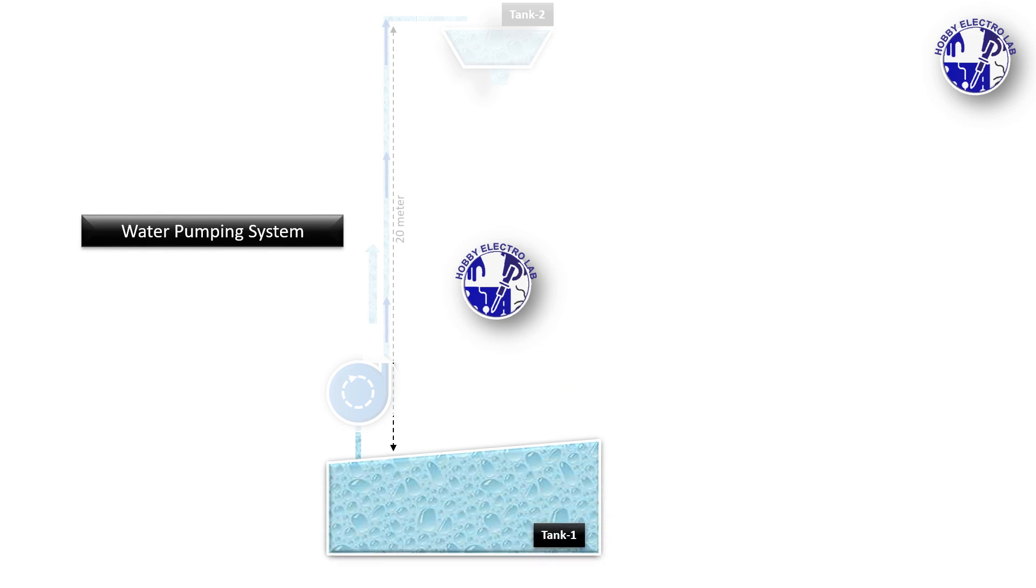Tank 1 is the lower reservoir where water is collected. A water pump takes water from Tank 1 and pumps it upwards at a flow rate of 1 liter per minute, consuming 5 watts of power.